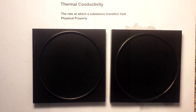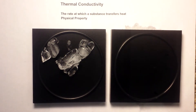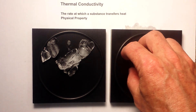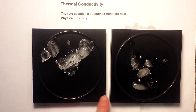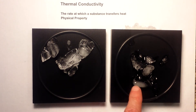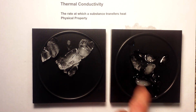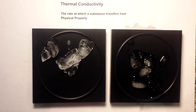Now the real test is I'm going to place ice on both of them and you will see which one transfers heat most quickly to the ice. I'll put ice on the plastic first, then some ice on the aluminum, and you can see that even though they're both at the same temperature, the aluminum melts the ice much more quickly — that is because it has a high thermal conductivity.